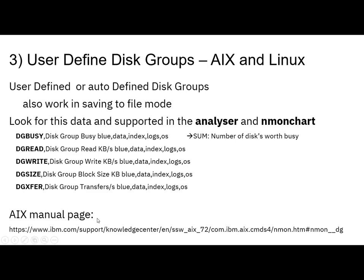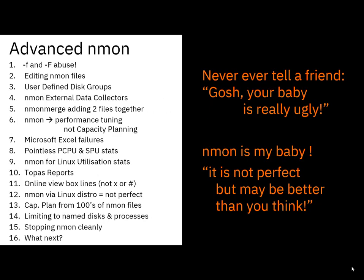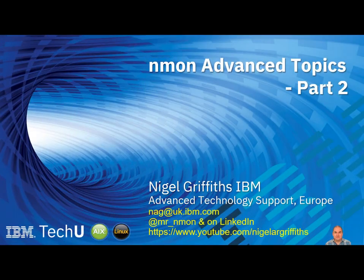The AIX manual page actually summarizes all of this quite nicely. That's enough for part two. Next time we'll look at number four: Nmon External Data Collectors. Don't forget to give us a thumbs up if you liked this video and learned something, and subscribe if you want to be notified when the next video comes out.